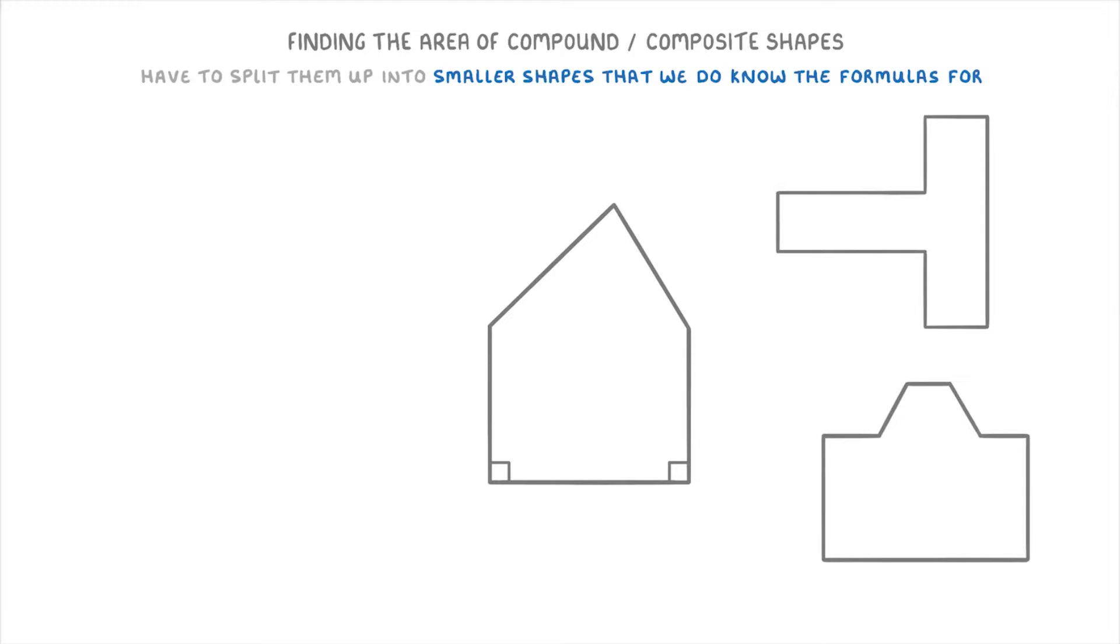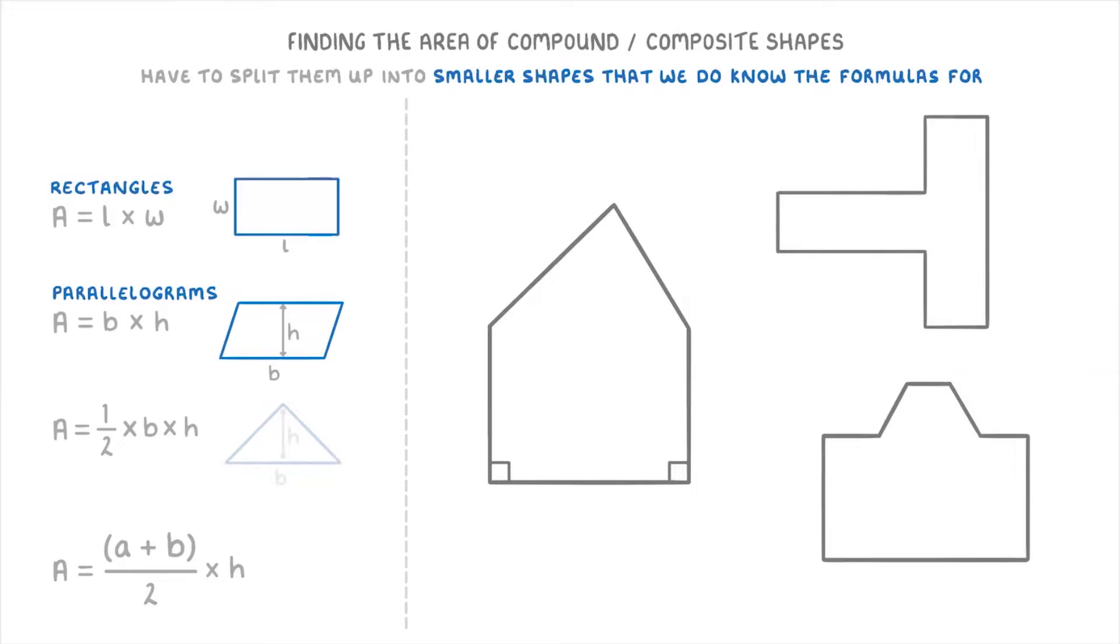To quickly recap, the main formulas you need to know are these four here, which are the ones for rectangles, parallelograms, triangles and trapeziums. So when you're given a weird shape, the aim is to break it up into some combination of these four shapes that we know the formulas for.